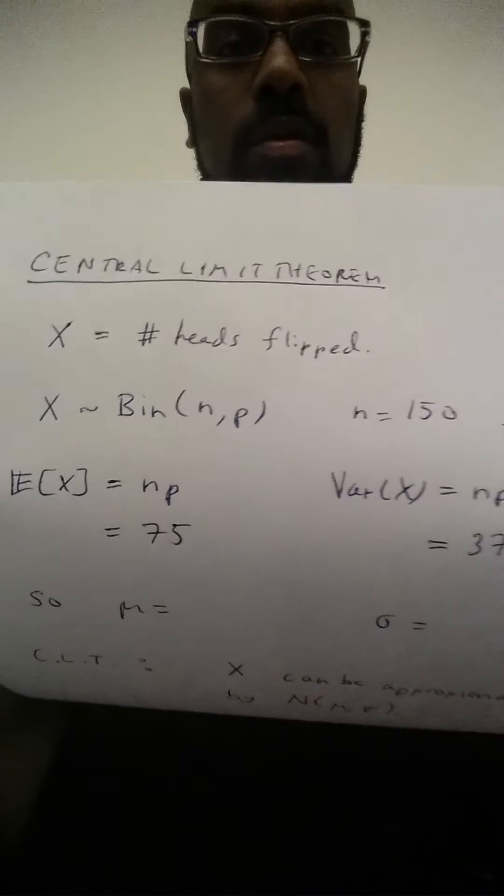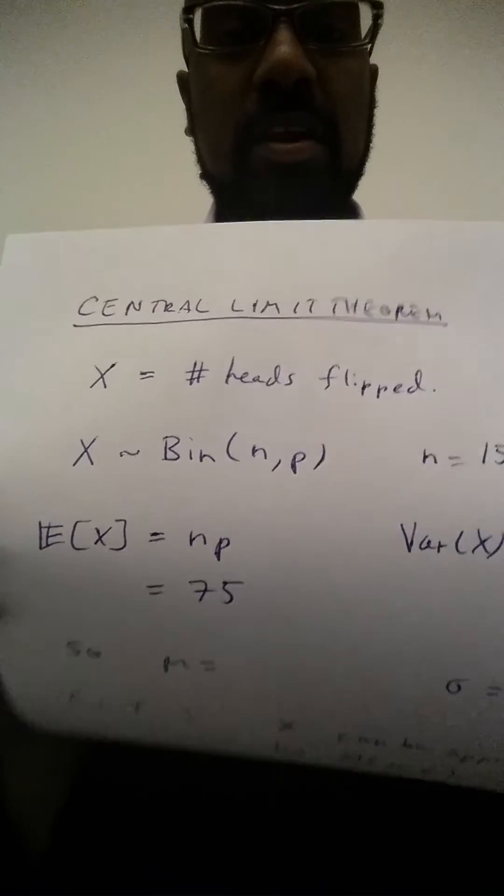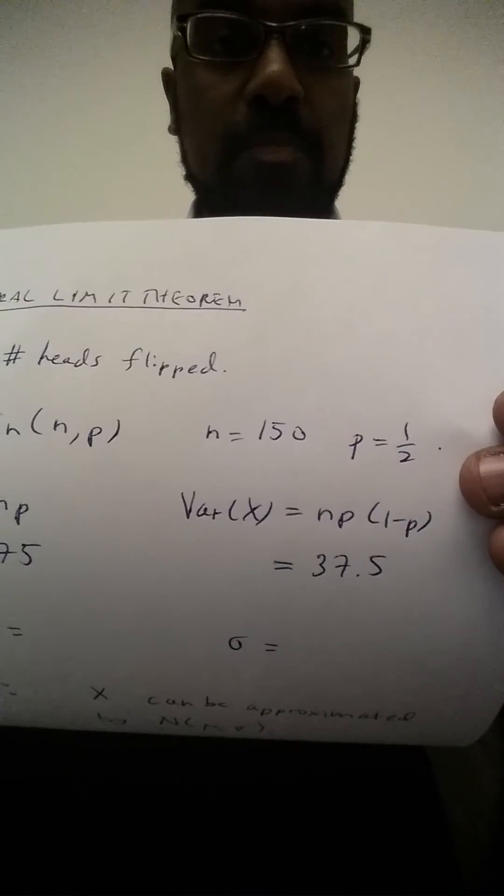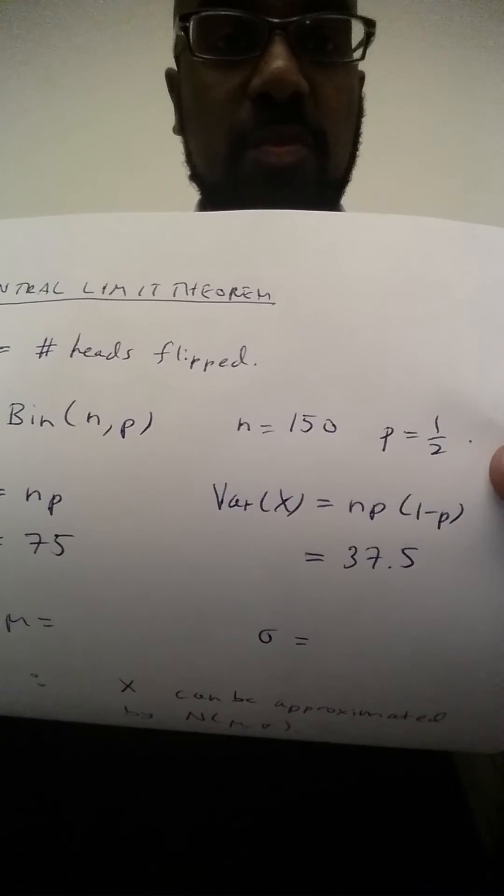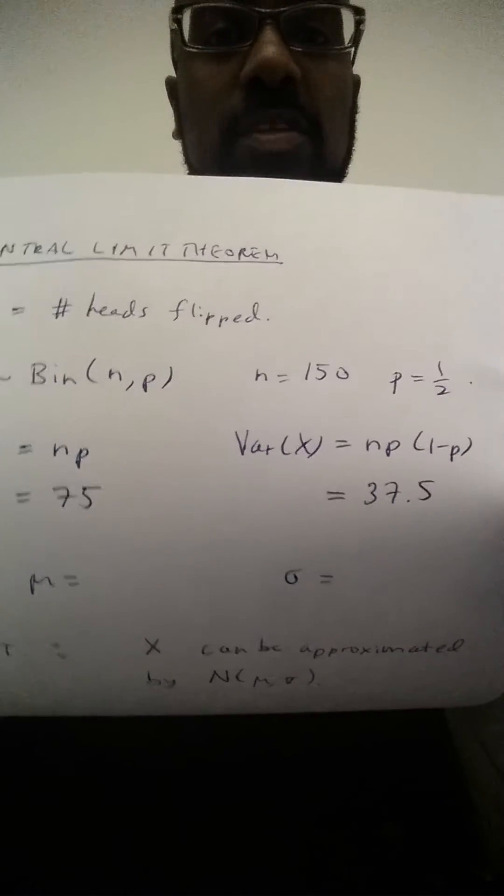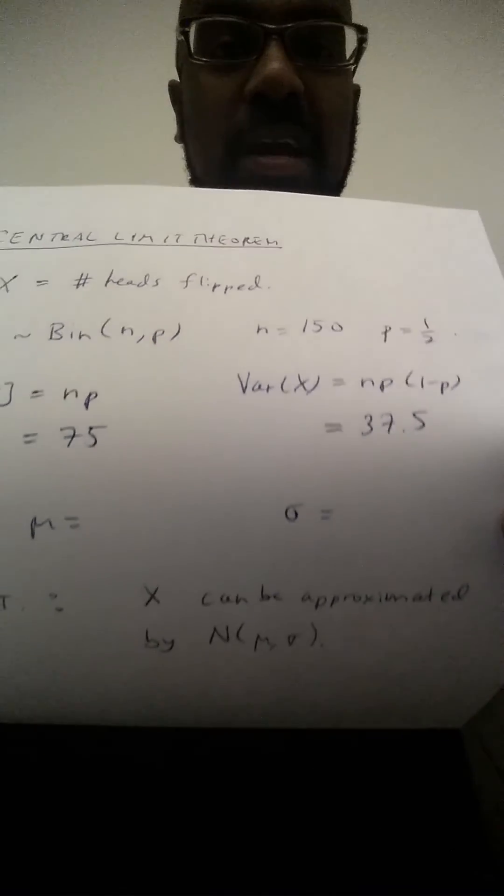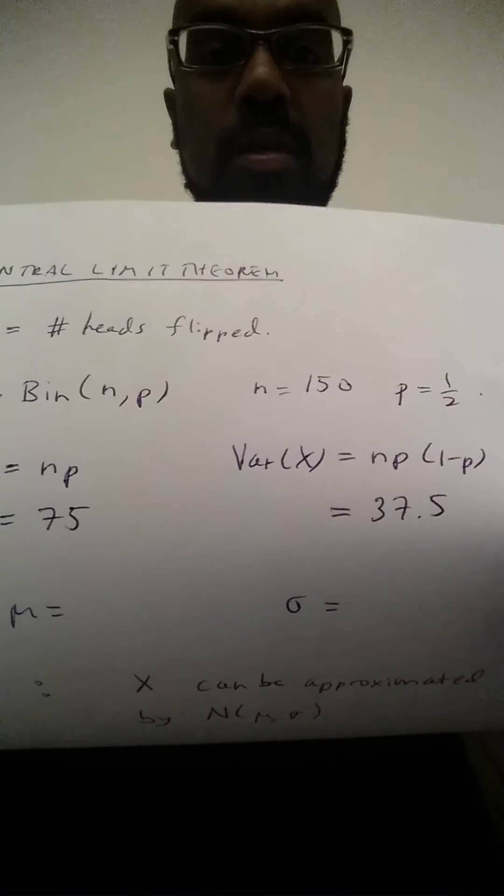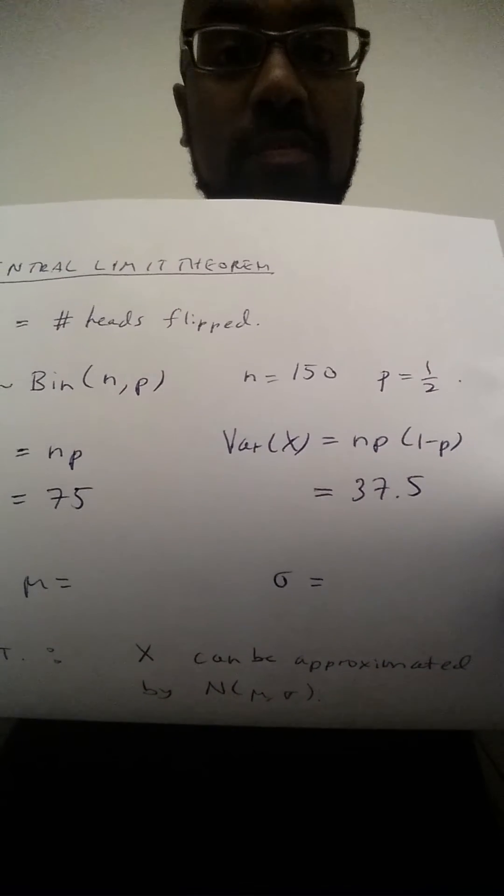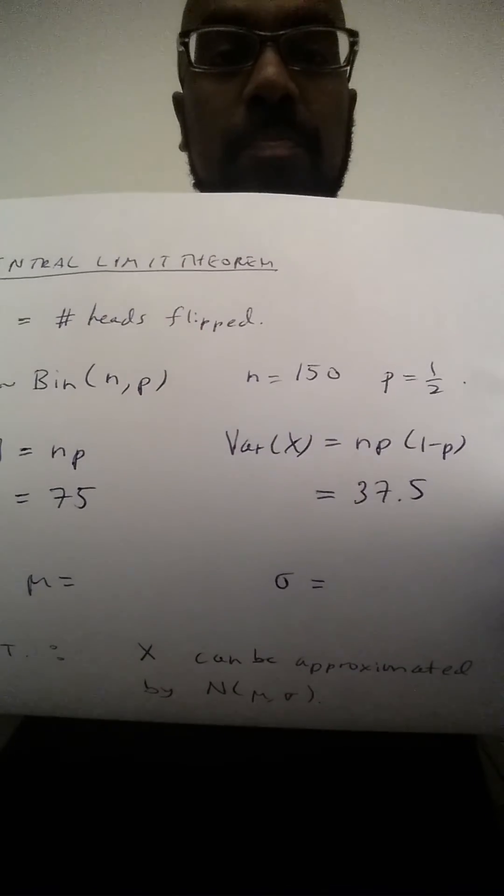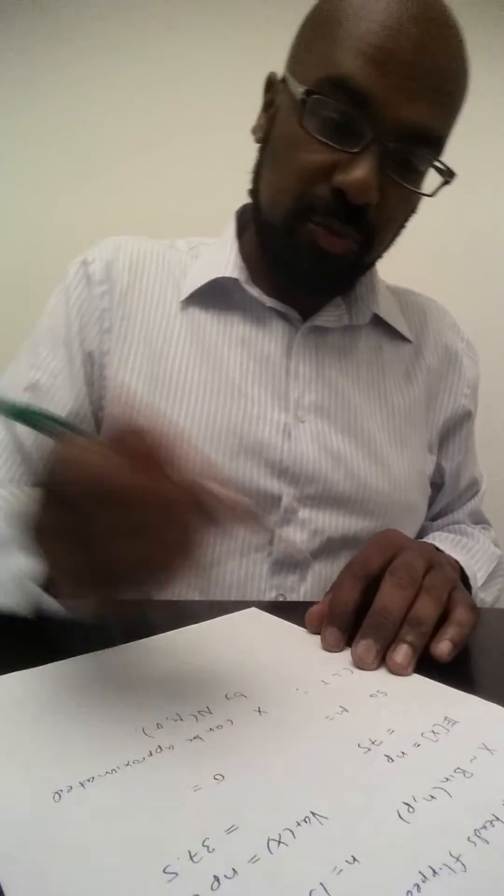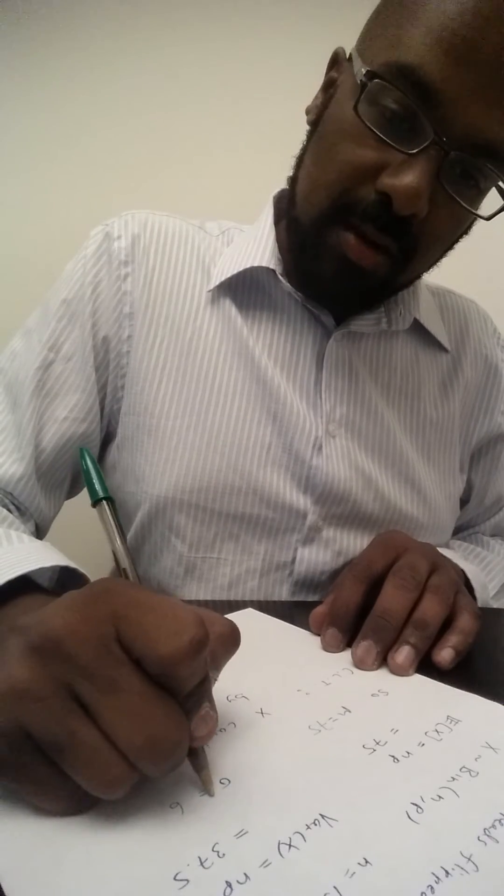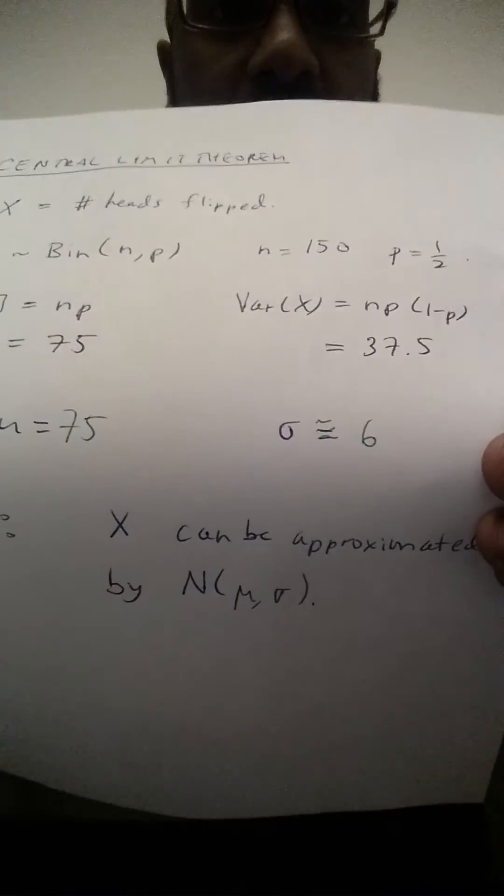Any binomially distributed random variable has expectation np and variance np(1-p). np in this case is 75, and np(1-p) is 37.5 because p is 1 half, so 1-p is 1 half as well. And 37.5, the square root of that is roughly 6 because 36 has square root 6. And so the mean of this distribution is 75, and the variance is 37.5 meaning the standard deviation is roughly 6.